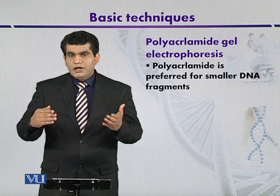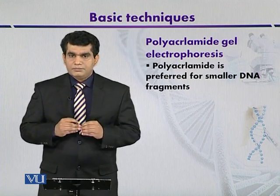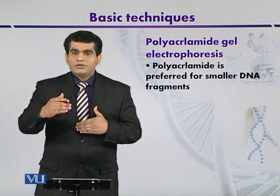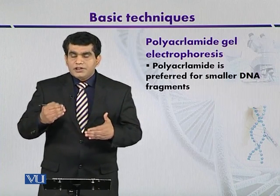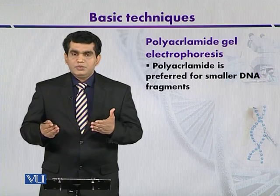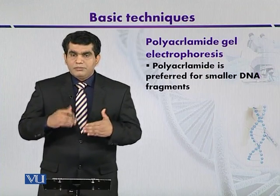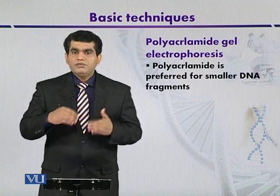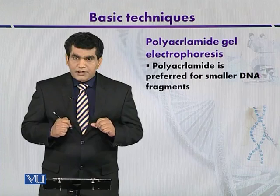When using agarose to separate DNA fragments, it is very important to adjust its concentration. If we are analyzing small DNA fragments, a higher concentration is used, like 2%, 3%, or 4%. For larger DNA fragments, a lower concentration like 0.7% to 1% is used. Low concentration allows larger molecules to pass through the gel, while high concentration reduces pore size so only smaller DNA fragments can pass through.